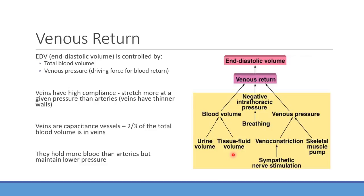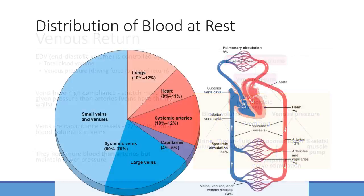Tissue fluid volume matters as well. If fluid exits the intravascular space — such as third-spacing of fluids, like ascites in the abdominal area or pitting edema in the extremities — that has a negative effect on blood volume because the volume is outside the vessels. The main modifiable factor is urine volume production, which can significantly change blood volume.